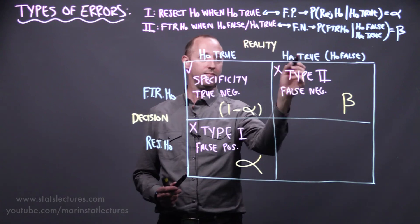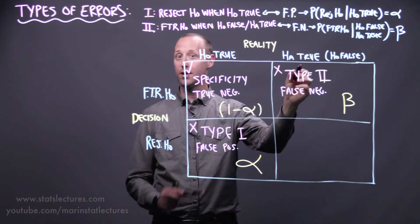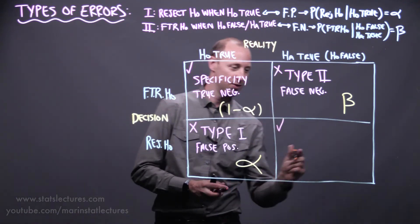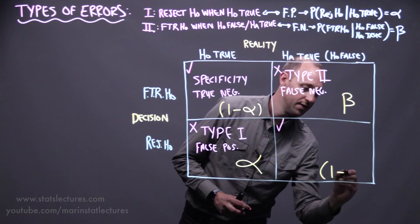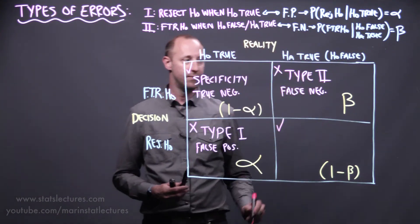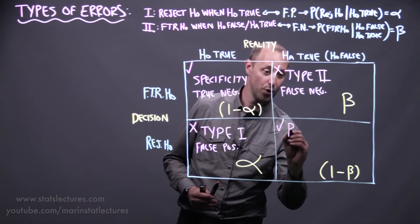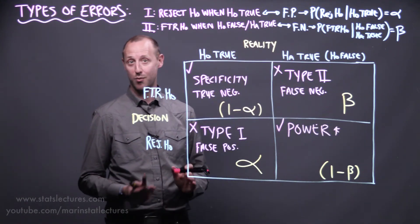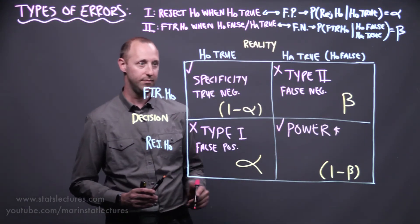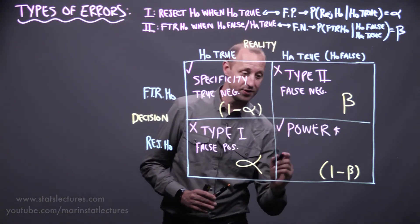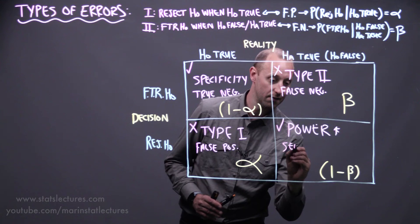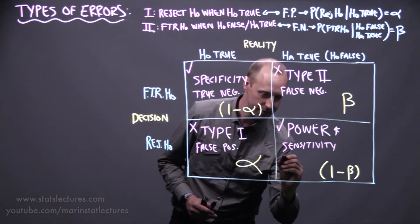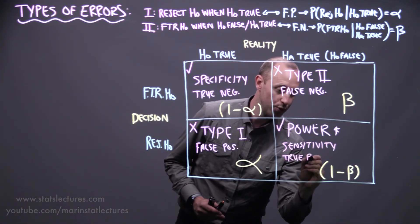Finally, when the alternative is true and we reject the null — we have evidence to believe the alternative is true — we've made the right decision. The probability of this is 1 minus beta. This gets a few different names, most notably power. In a medical setting, it also gets referred to as sensitivity, or sometimes as a true positive.